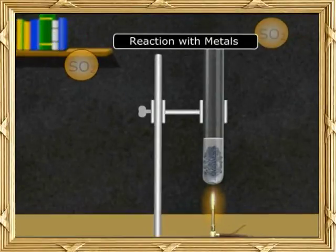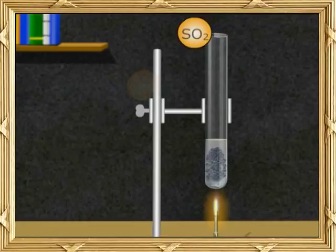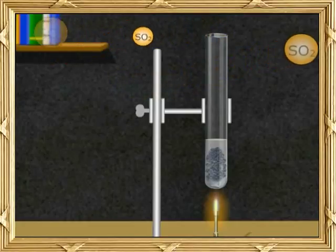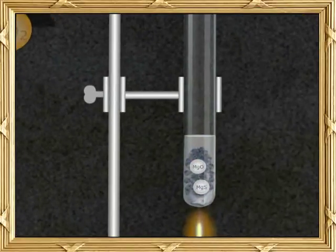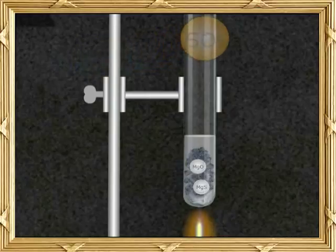Reaction with metals. Metals like magnesium and potassium burn in sulphur dioxide to form a metal sulphide and metal oxide. In this reaction, sulphur dioxide acts as an oxidizing agent and oxidizes magnesium to its oxides.